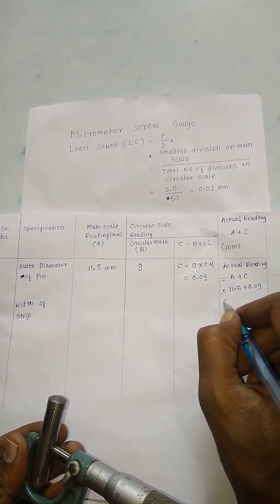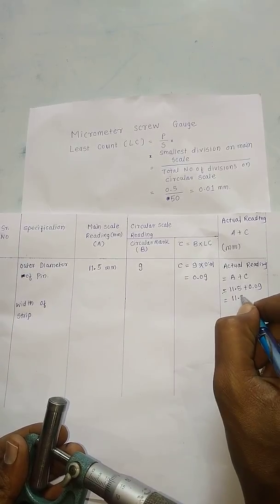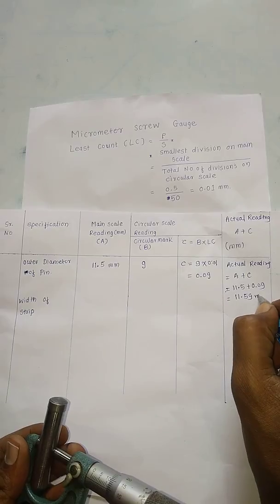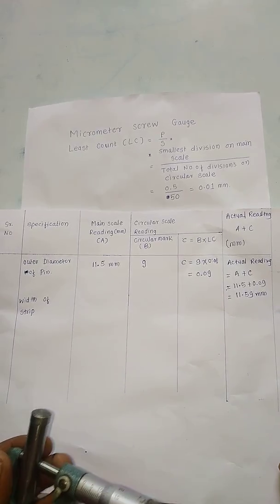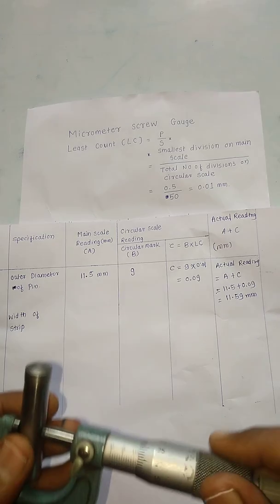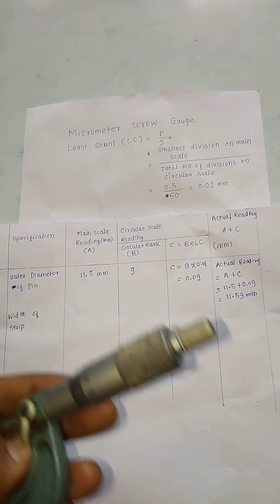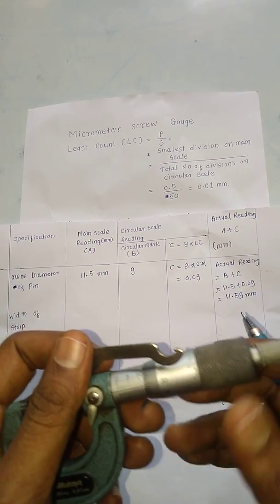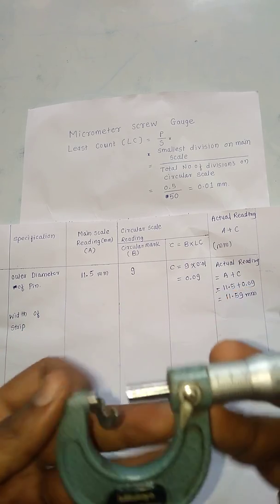The actual reading is equal to A plus C. Here A is equal to 11.5 mm and C is equal to 0.09 mm, so the actual reading — the outer diameter of the pin — is equal to 11.59 mm. After that we will check the width of the strip using this micrometer screw gauge.